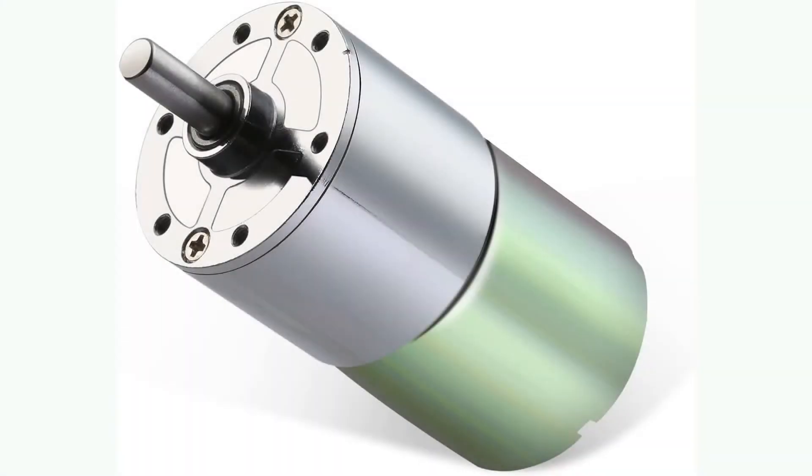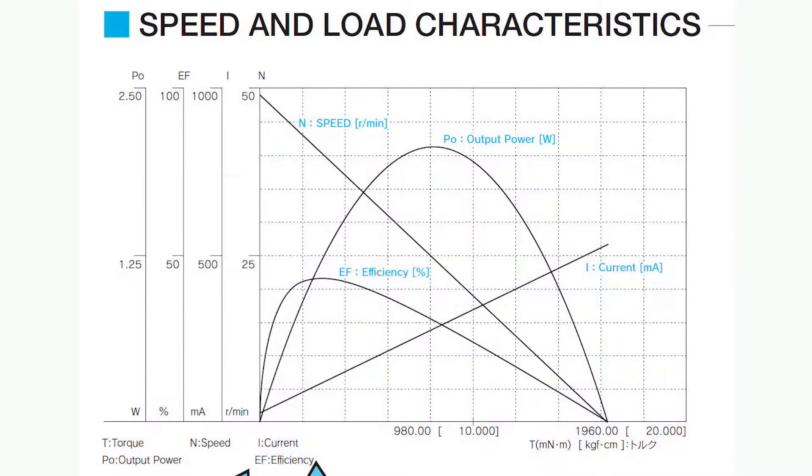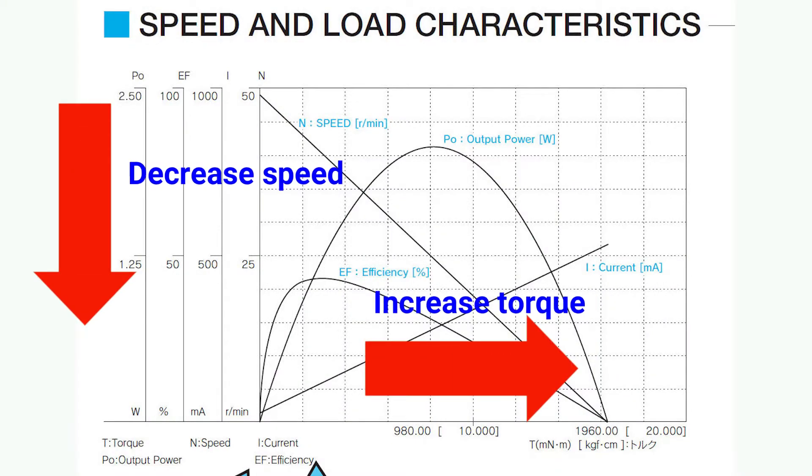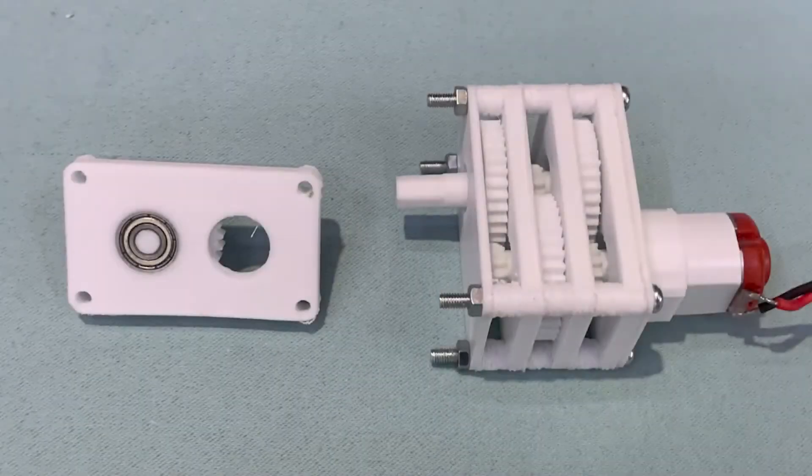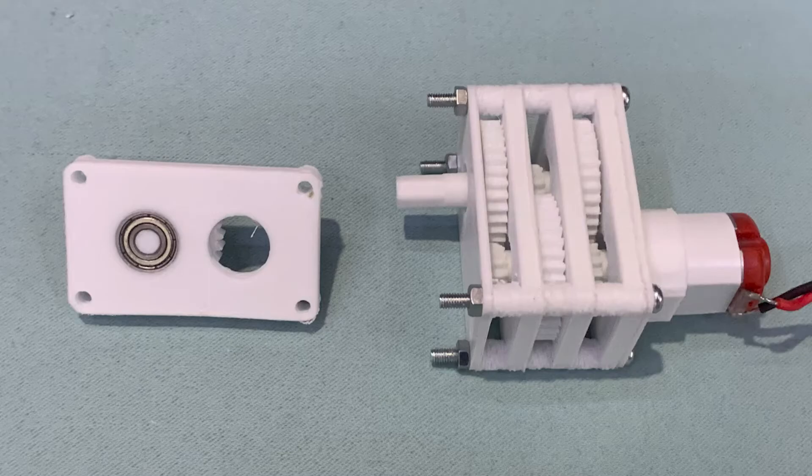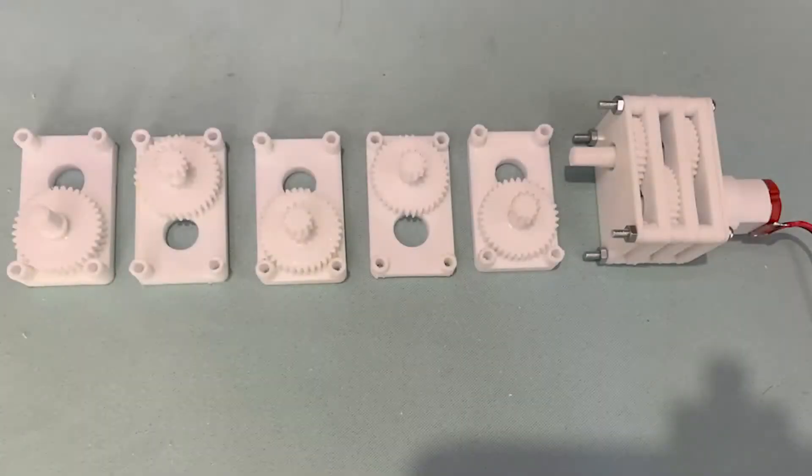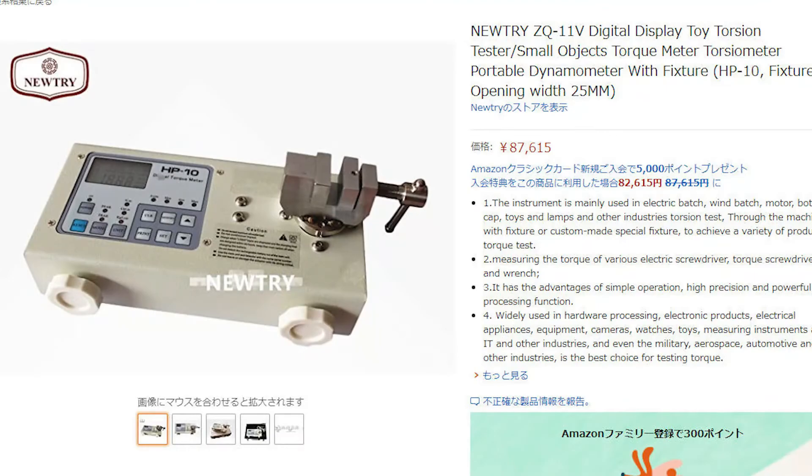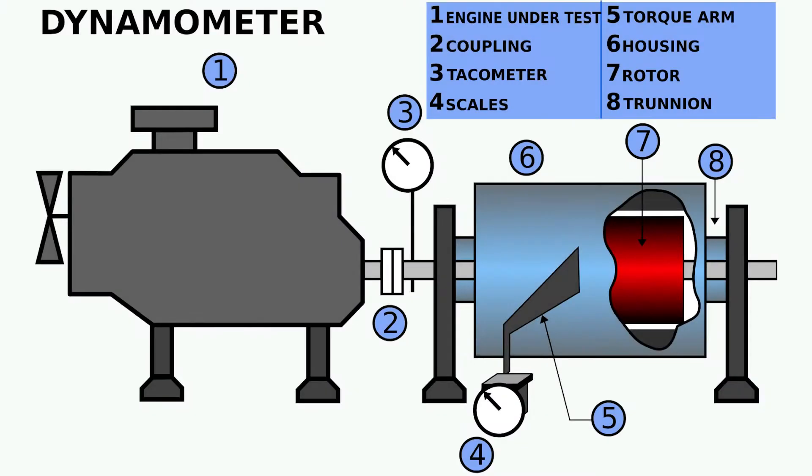This is why the gearbox is very useful and popular. They can increase the torque by decreased speed. Today, I will tell you how to make extendable gearbox which has ball bearing embedded. Next time, I will make a torque meter to measure the change of the torque. Stick around, let's start.